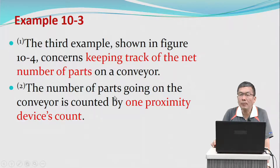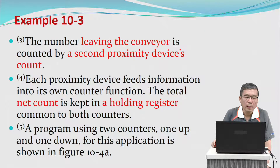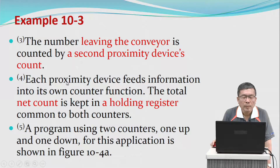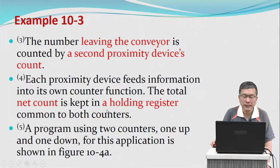The number of parts going on the conveyor is counted by one proximity device's counter. The number leaving the conveyor is counted by a second proximity device counter. Each proximity device feeds information into its own counter function. The total net count is kept in a holding register common to both counters.